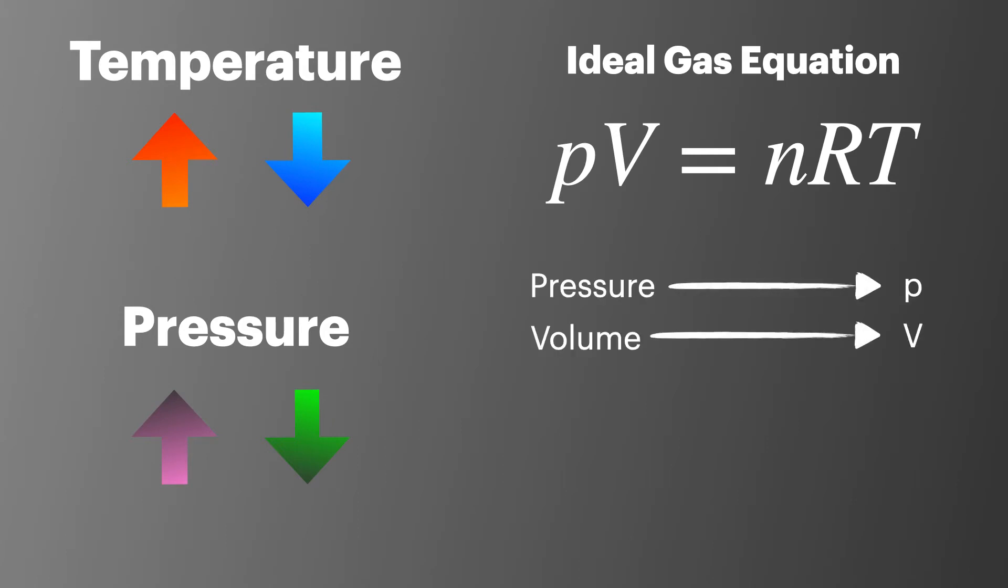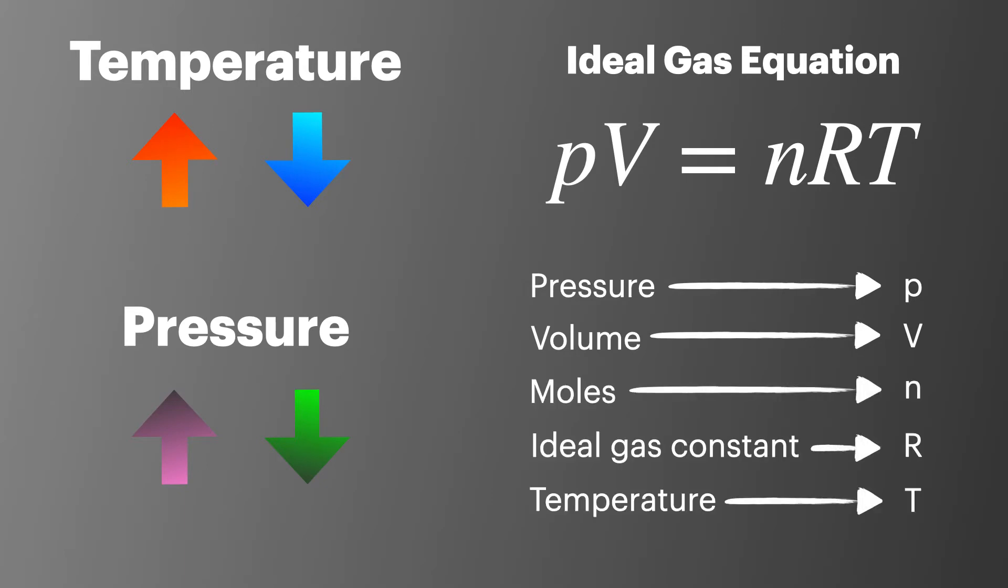Pressure is represented by P. Volume is shown as V. The number of moles is n. The ideal gas constant is R. And temperature is T.